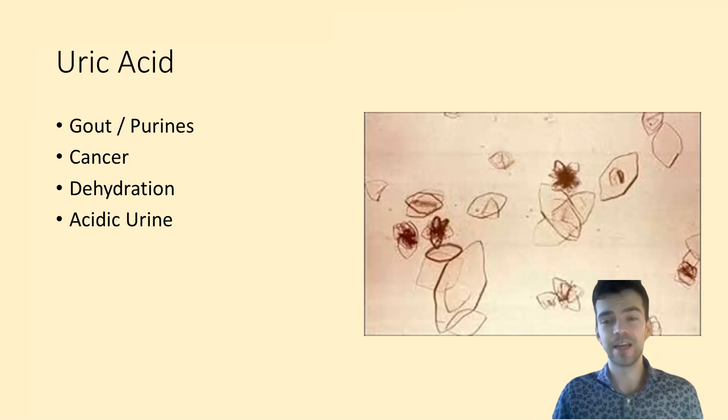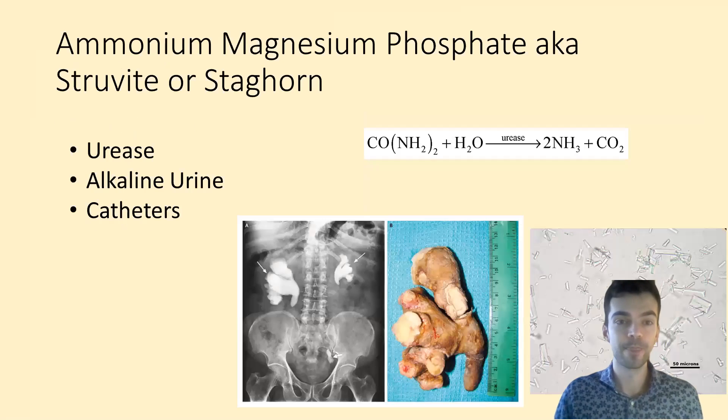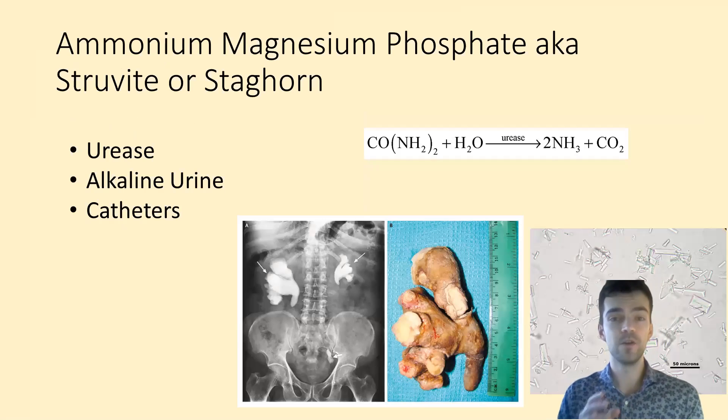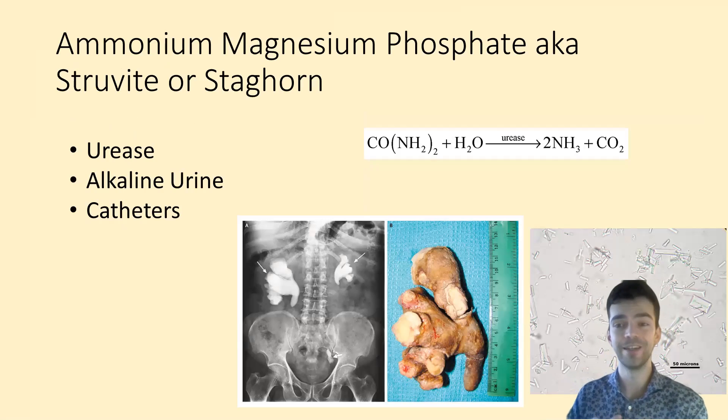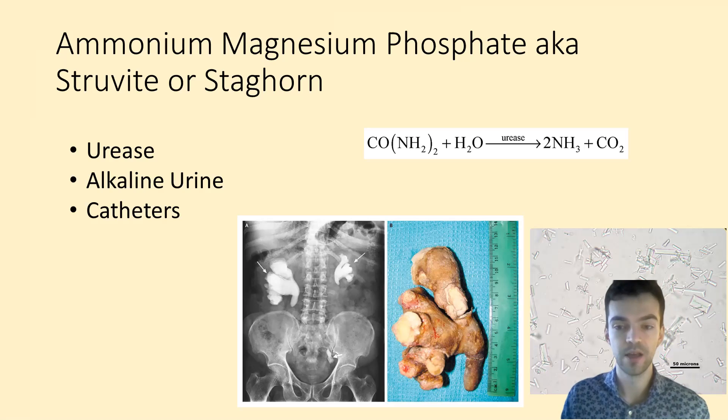Next we have ammonium magnesium phosphate stones, more commonly known as struvite or staghorn calculi. These stones form as a result of infection. You have a bacteria in your urinary tract with an enzyme called urease, which breaks down urea into ammonia and CO2. That ammonia combines with magnesium and phosphate to create really giant stones. If you see here on the diagram at the bottom, both of those giant white blotches are these stones, and here we can see the biopsy of it being taken out—they are really massive.